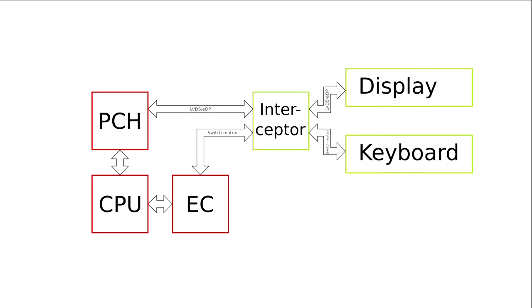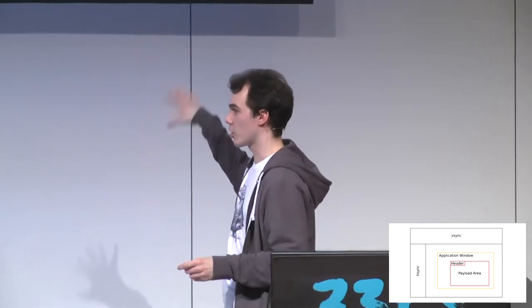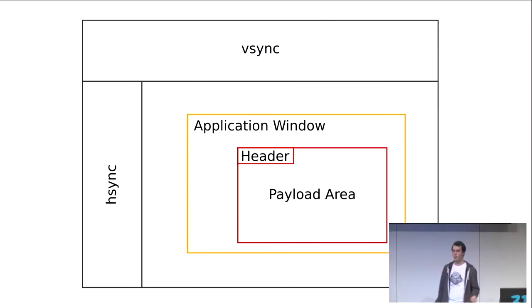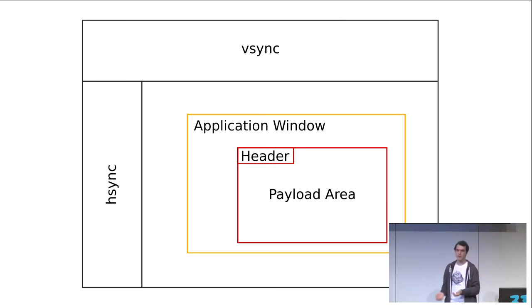Looking at the block diagram of this general idea, we have this interceptor device. It needs to receive LVDS, process it, send it back out, and do something with the keyboard switch matrix scanning. How would you actually control that from an application point of view, from software running on the host machine? This is the general idea I had. This is a diagram of what a frame sent over basically any monitor standard today looks like.